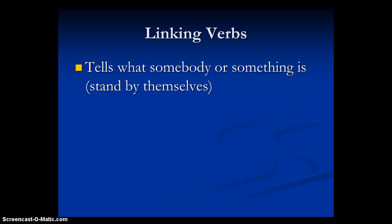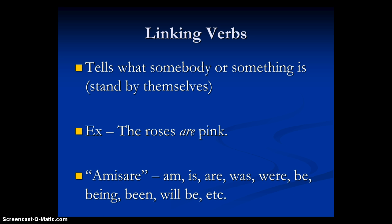Next, we're going to linking verbs — a little bit more difficult, a little harder to kind of wrap your hands around. Linking verbs tell what somebody or something is, and they usually stand by themselves. When you were younger, you saw really short sentences and said, 'I don't know what the action verb is here, because there is no action.' The example is: the roses are pink — they're not actually doing anything. Your teachers may have referred to them as 'amazar' verbs. Those linking verbs are the words am, is, are — that's amazar — was, were, be, being, been, will be. Any of those to-be verbs in the past, present, or future are linking verbs.